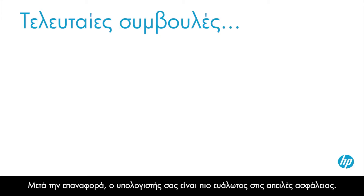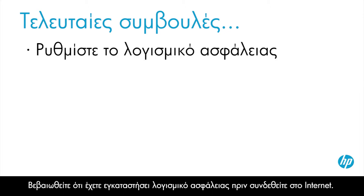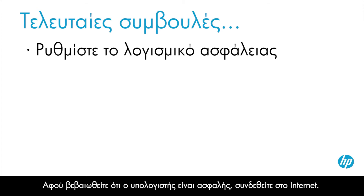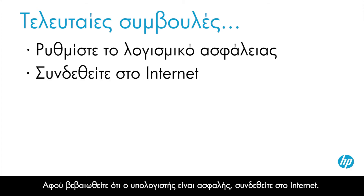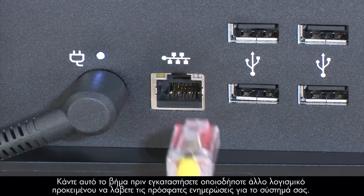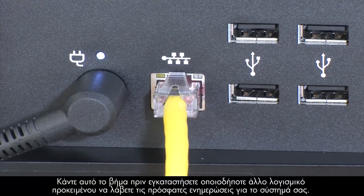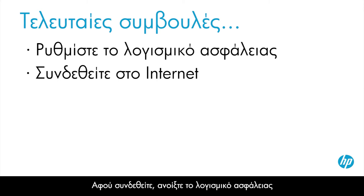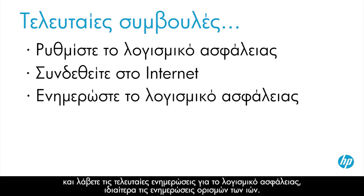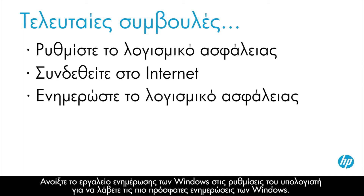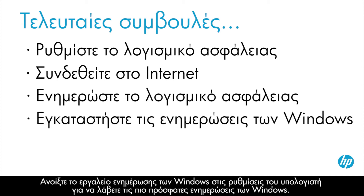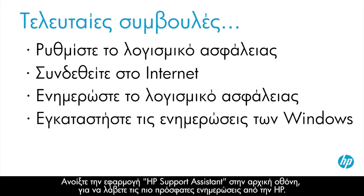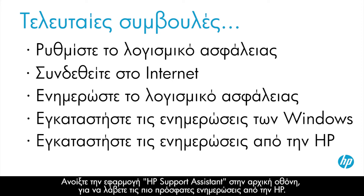After recovery, your computer is more vulnerable to security threats. Make sure you have security software installed before connecting to the Internet. Once your computer is secure, connect to the Internet. Do this before installing other software in order to get the latest updates to your system. After connecting, open your security software and get the latest updates, especially updates to virus definitions. Open the Windows Update tool in PC Settings to get the latest updates for Windows. Open HP Support Assistant on the Start screen to install the latest important updates from HP.